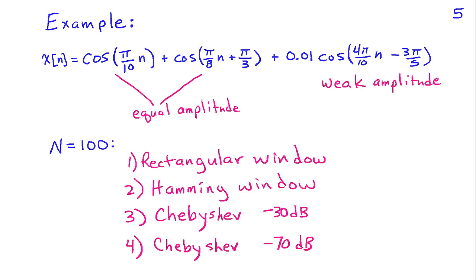And I'm going to consider a case where I have a pair of equal amplitude sinusoids, fairly closely spaced. One is at pi over 10 and the other is at pi over 8. And then I have a very weak sinusoid located at a frequency some distance away at 4 pi over 10.